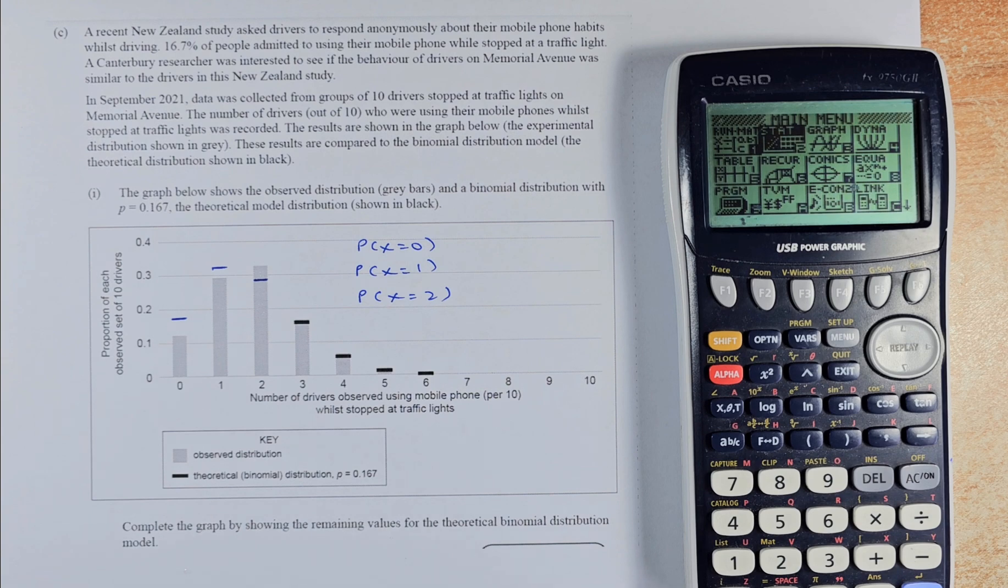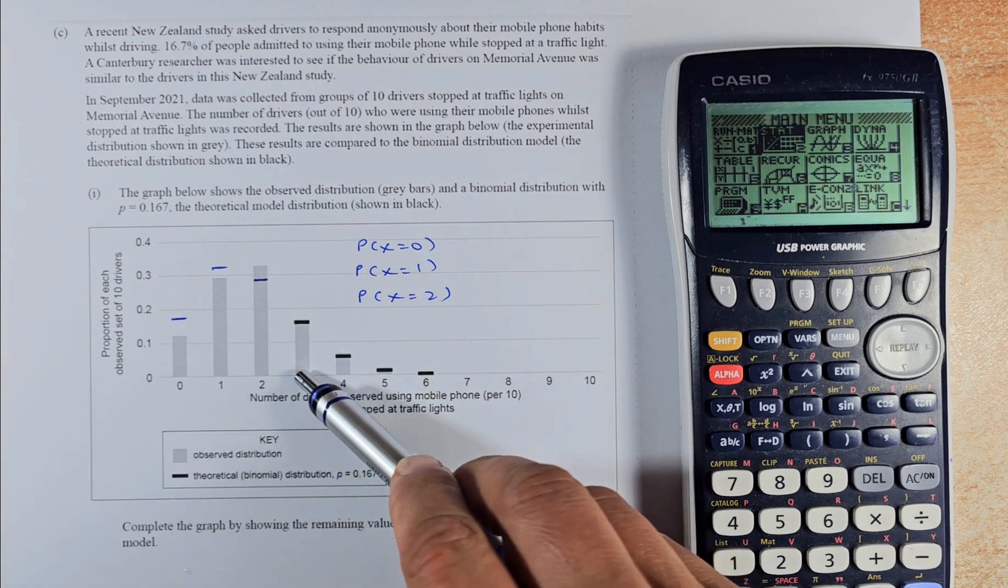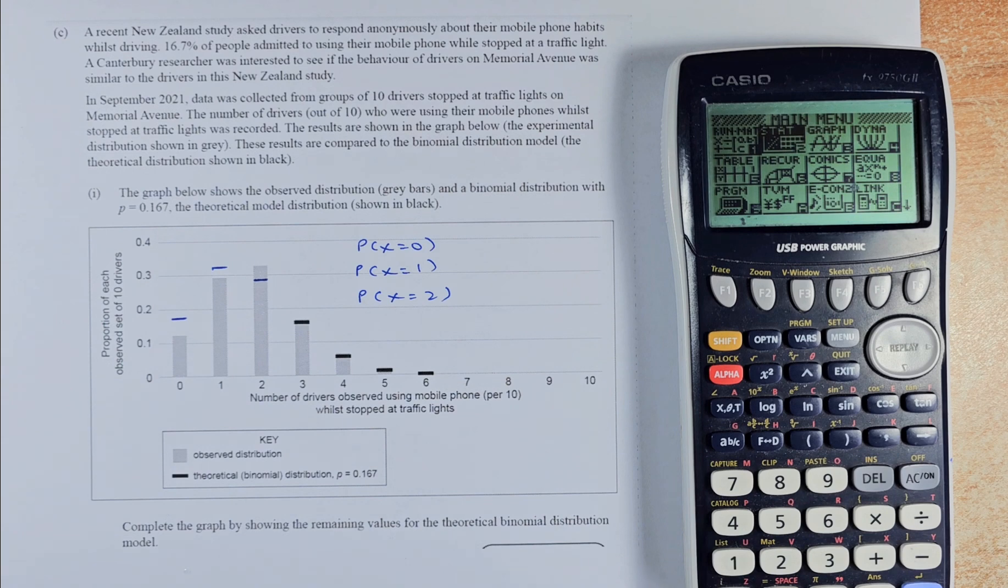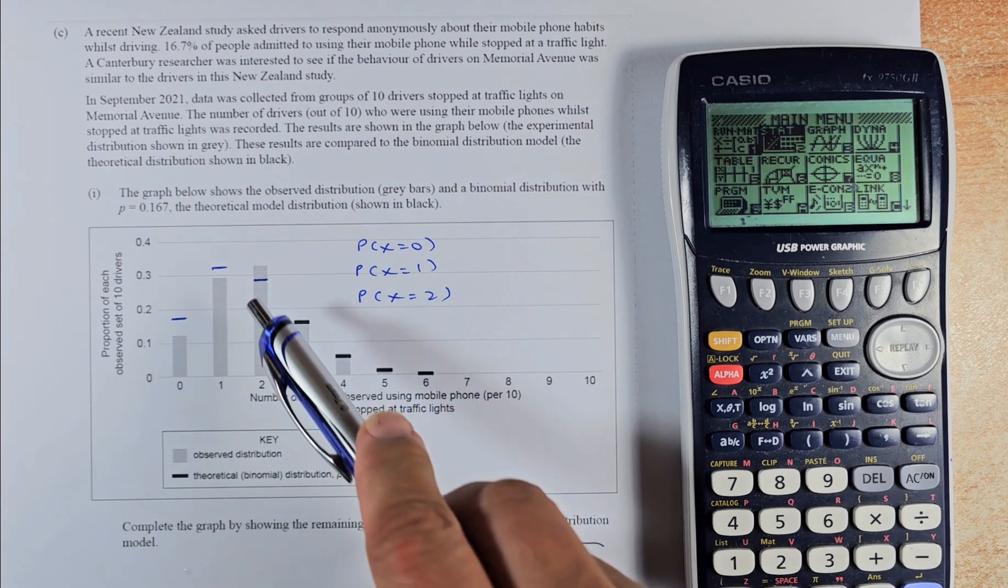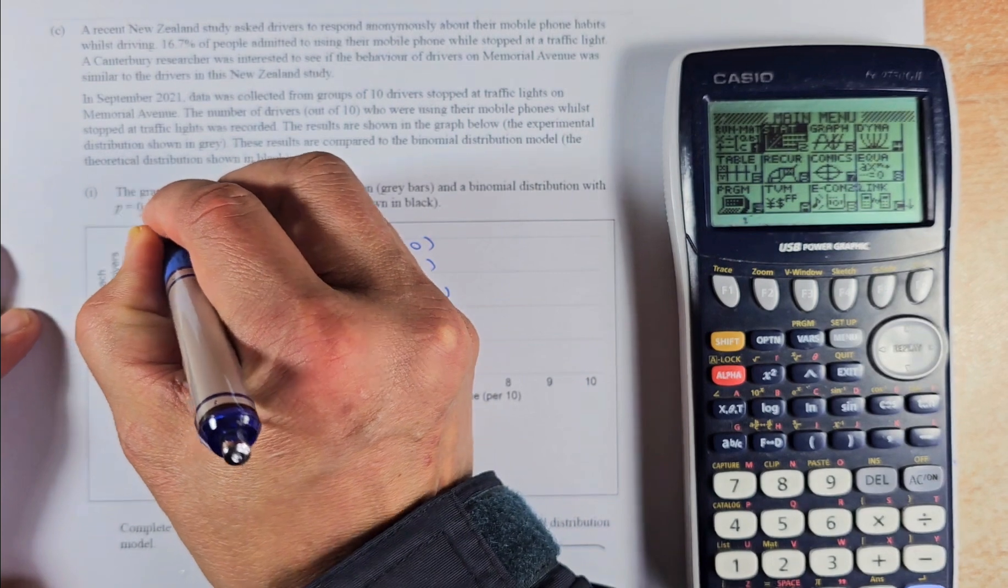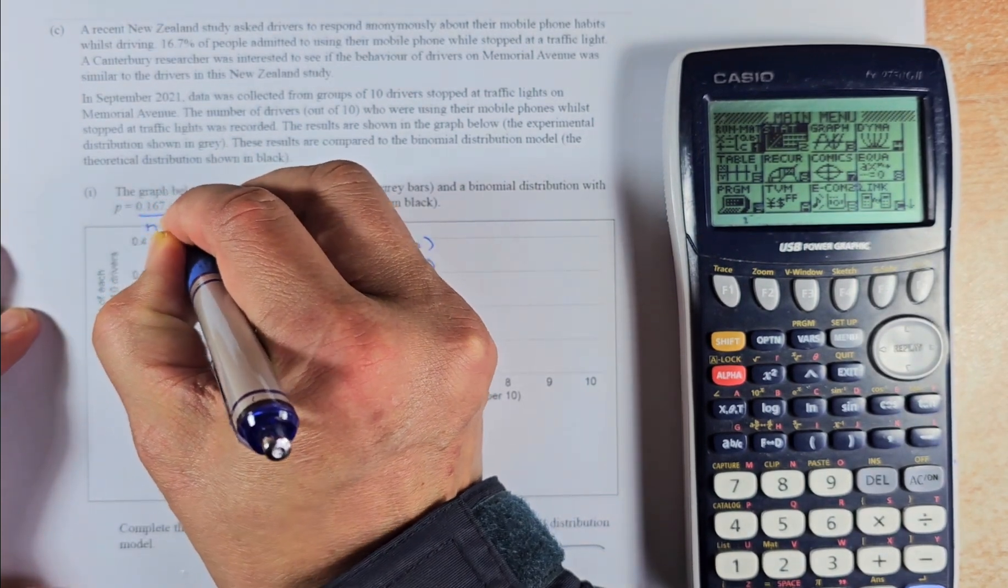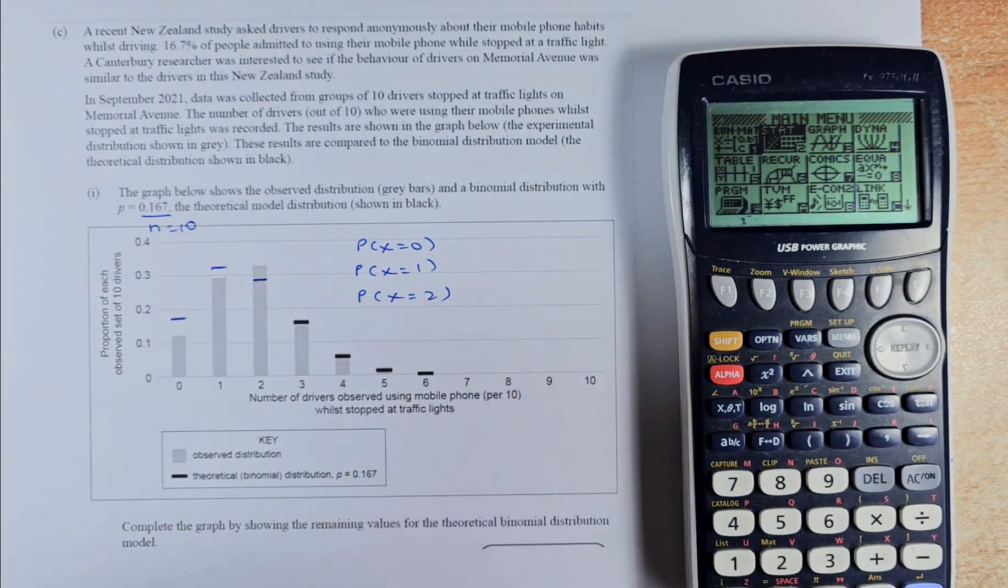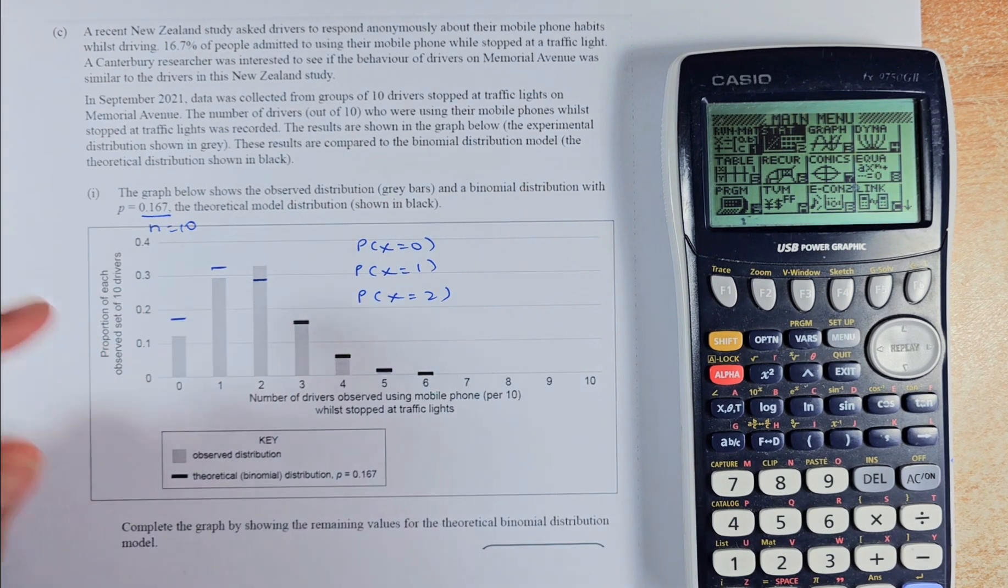The experimental are shown in grey. All these are the experimental, or the observed. These results are compared to the binomial distribution model. The theoretical probability are in black. We are going to learn how to calculate these three numbers here in a moment. The graph shows the observed distribution, the grey bars, and the binomial distribution with P equal to 0.167. So we are going to put P 0.167 and N equal to 10 because there are 10 drivers. The theoretical probability model is shown in black.